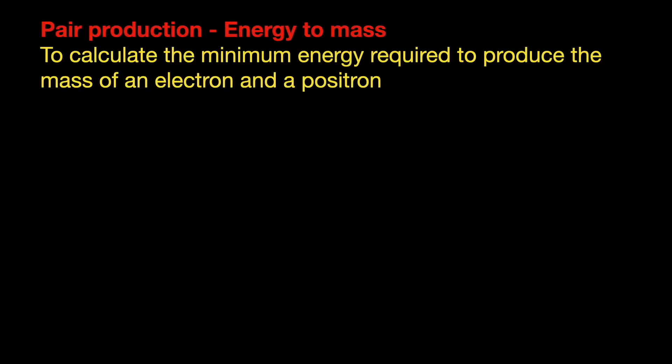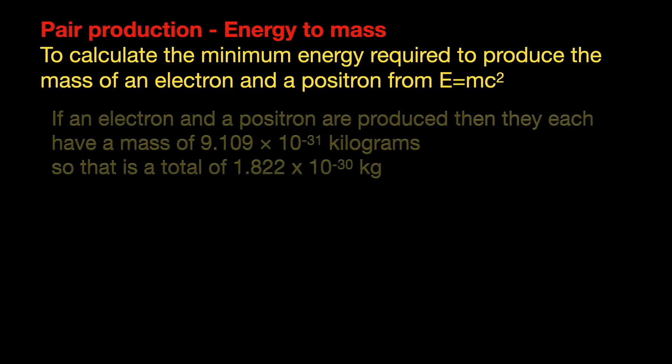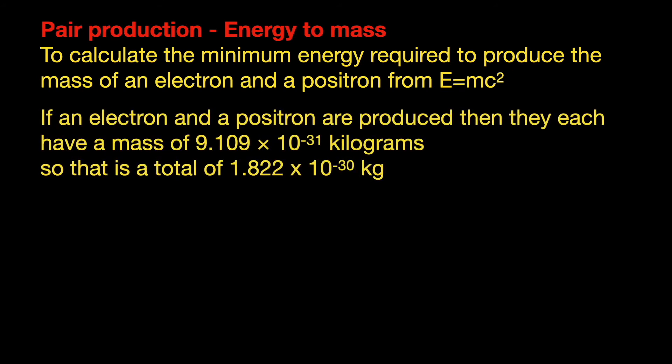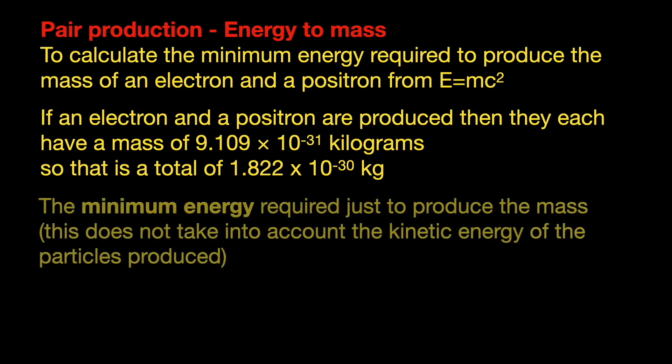We're going to calculate the minimum energy to produce the mass of an electron and a positron from a gamma photon using this equation. The electron and positron have the same mass, so we have to produce the total mass of 1.822 × 10⁻³⁰ kilograms.